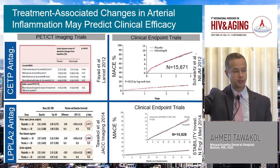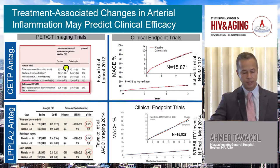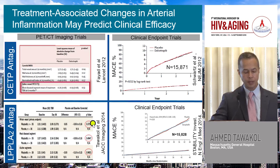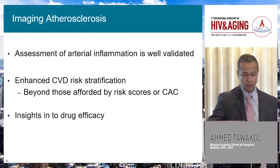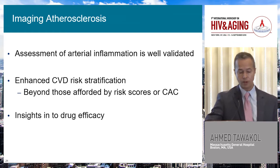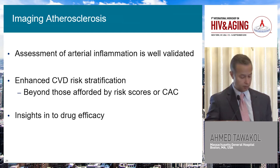Now let me show you some neutral studies. A study looking at a CETP antagonist showed no effect on arterial inflammation, and 16,000 patients later, there was no effect on clinical endpoints either. Another study showed no change on any predefined or exploratory imaging endpoints, and 16,000 patients later, no change in clinical endpoints. There seems to be a strong correlation between imaging trials and cardiovascular disease endpoint trials. Assessment of arterial inflammation is well validated, enhances CVD risk stratification, and provides insights into treatment efficacy.